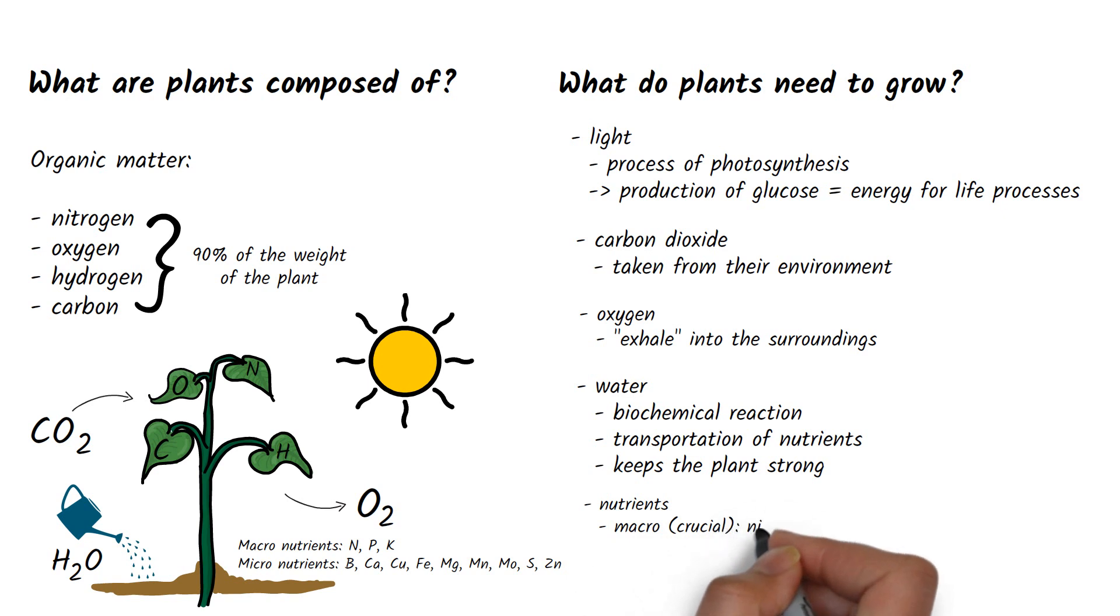These are divided into macro and micronutrients. Macronutrients include nitrogen, phosphorus and potassium. These are absorbed in the greatest quantities and are crucial for a plant's survival.